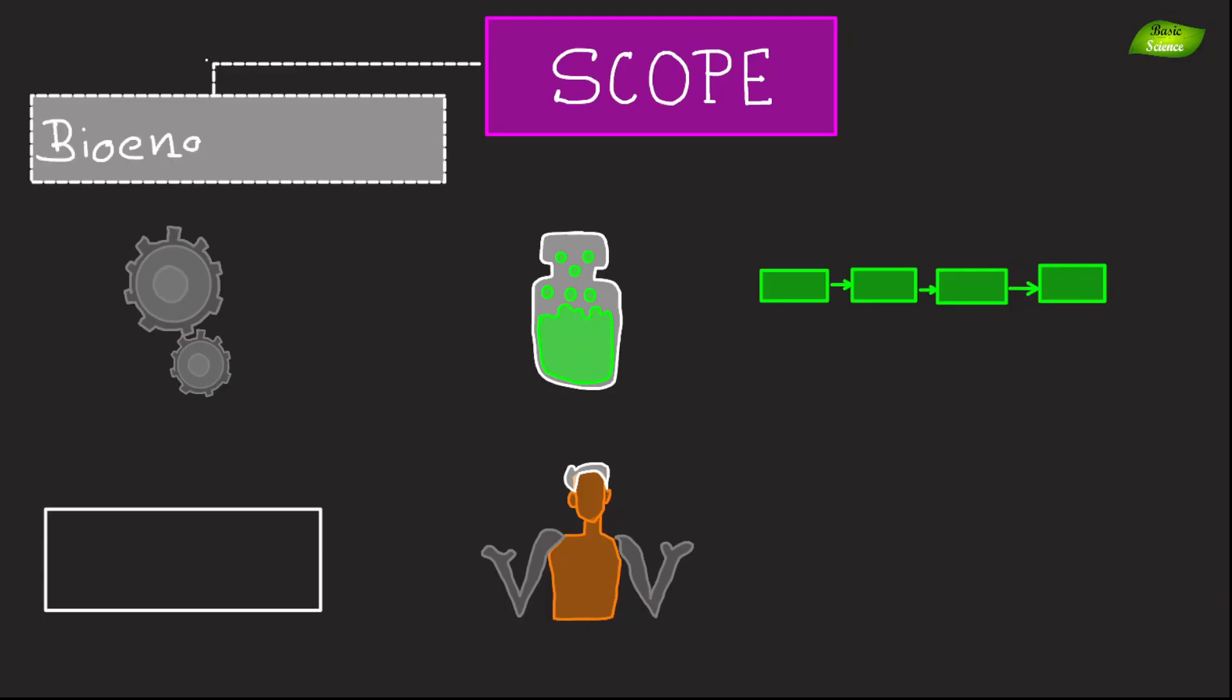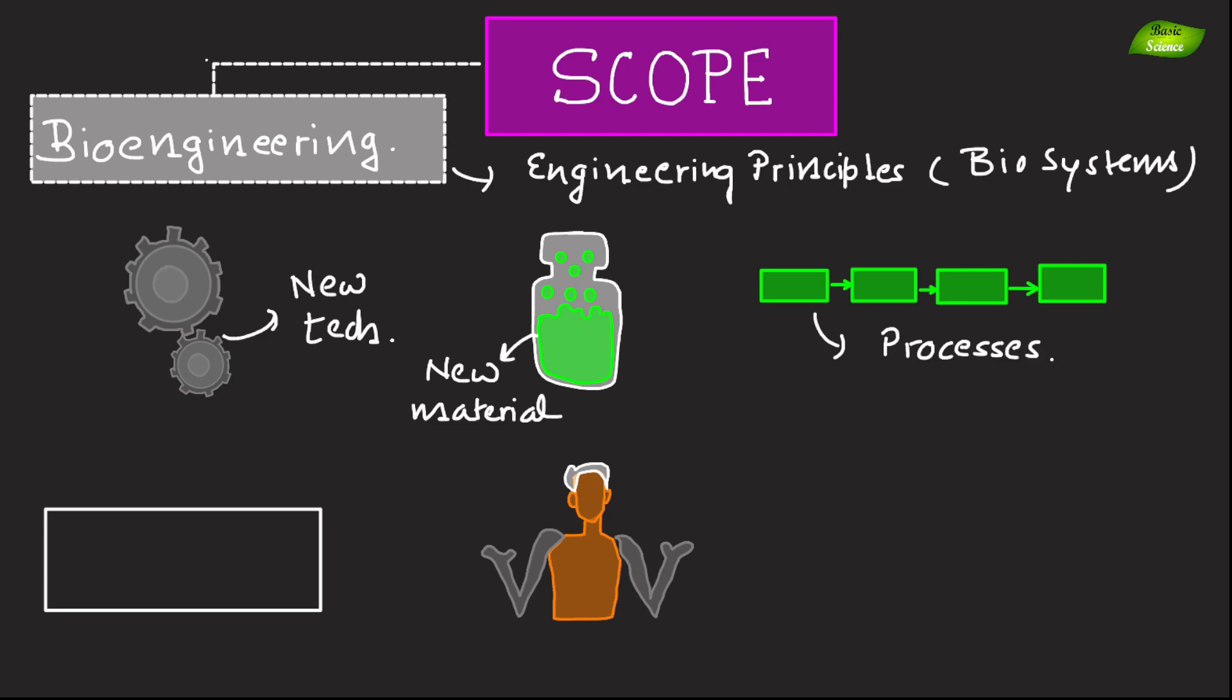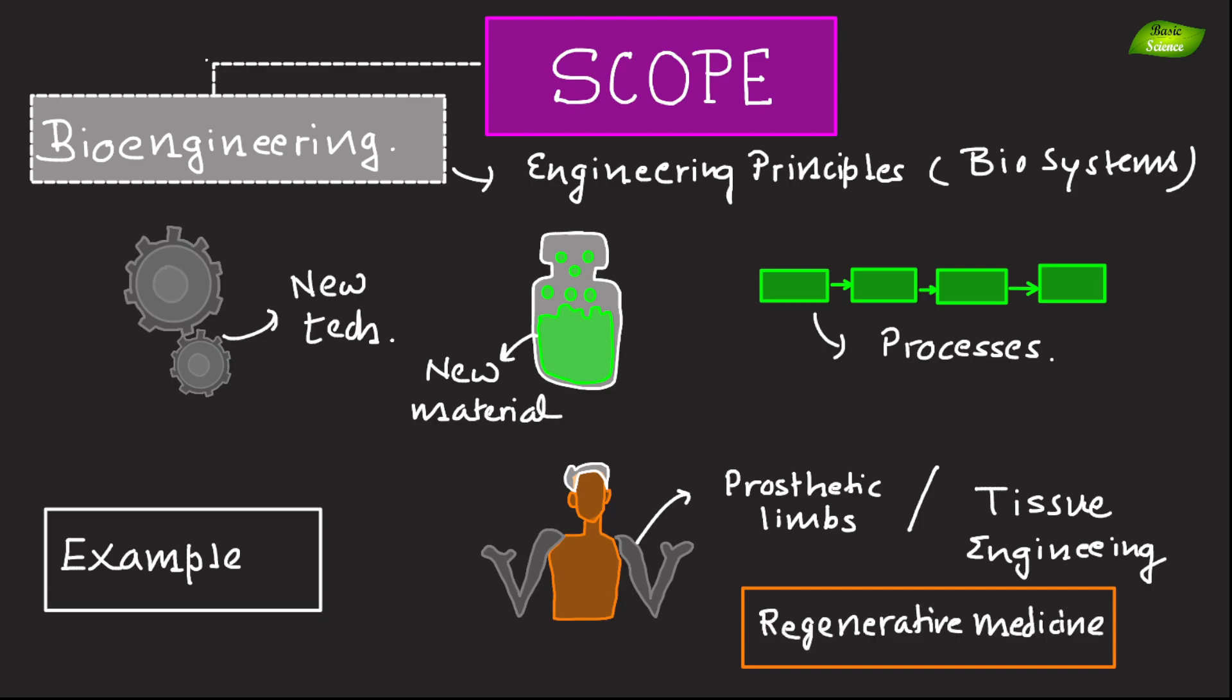Bioengineering involves applying engineering principles to biological systems for the development of new technologies, new materials, as well as new processes. Examples include designing prosthetic limbs or tissue engineering for regenerative medicines.